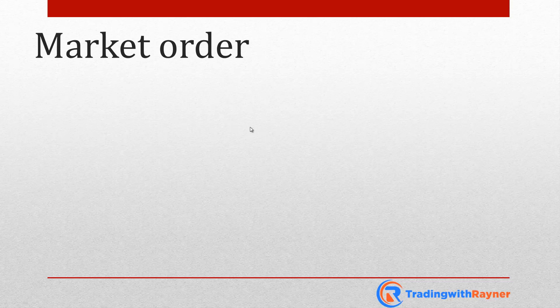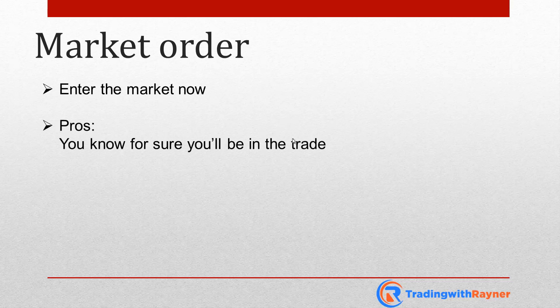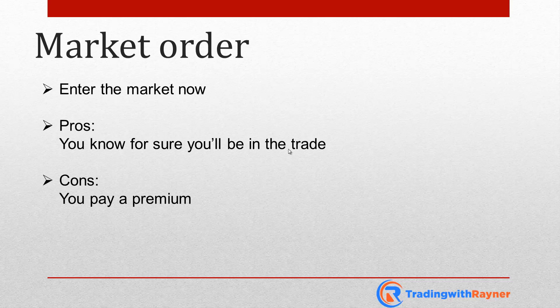A market order — what is it? It's simply that you want to enter the market right now. For example, you are looking at a chart and the market is moving without you, and you tell yourself, 'I've got to be in this move, I've got to enter the market right now.' If you want to enter the market right now, you use a market order. You know for sure you'll be in a trade. However, the downside is that you will pay a premium — maybe the market might retrace and give you a better price, but because you want to enter right now, you pay whatever the current prevailing market price is.